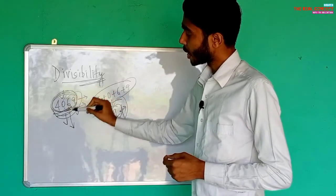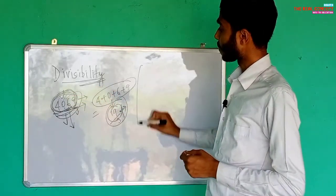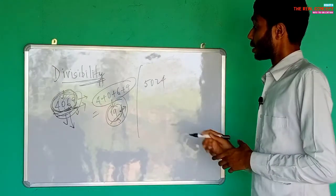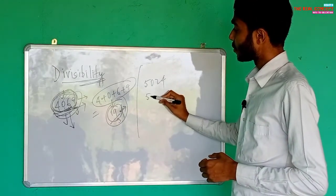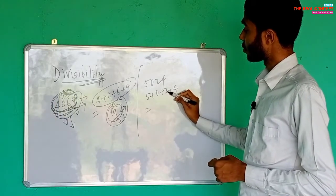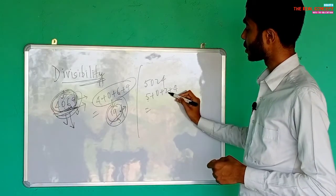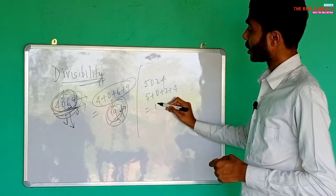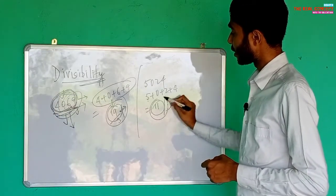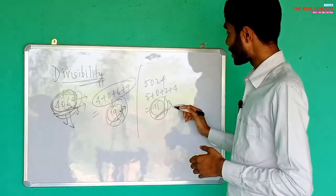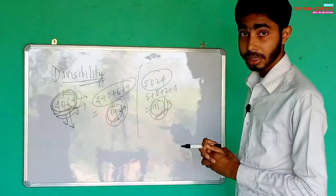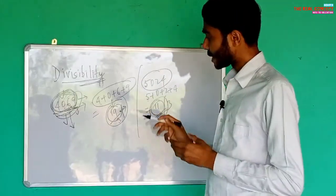Let's take another example: 5024. The total sum of the digits is five plus zero plus two plus four. Five plus two is seven, and seven plus four is eleven. Eleven is not completely divisible by three. So the number five thousand twenty-four is not completely divisible by three.